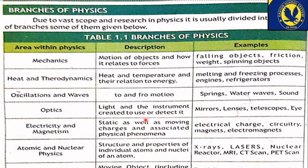چوتھی branch ہے optics — light and the instruments created to use or detect it۔ یعنی جو بھی چیزیں روشنی سے متعلق ہیں یا روشنی کو detect کرنے اور استعمال کرنے کے آلات — mirrors، lenses، telescope، eye۔ یہ ایک بہت vast field ہے کیونکہ مختلف قسم کی cameras، microscopes، telescopes یہ سب اس میں آتا ہے اور ہر روز اس کا scope بڑھتا جا رہا ہے۔